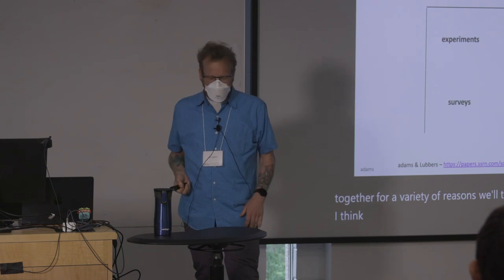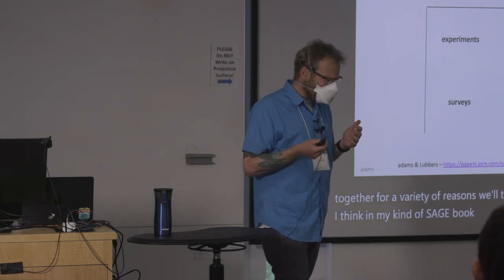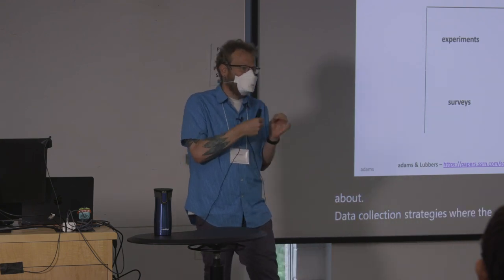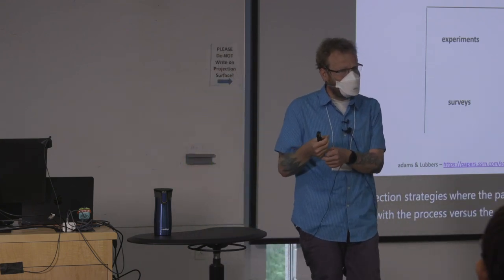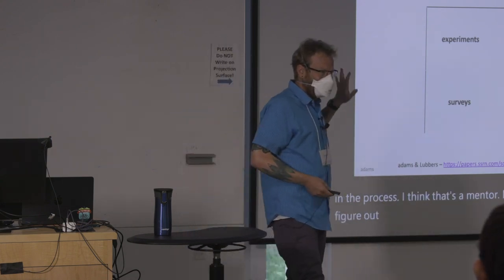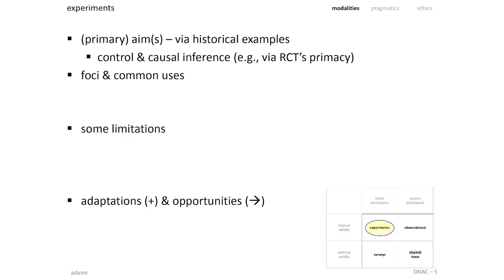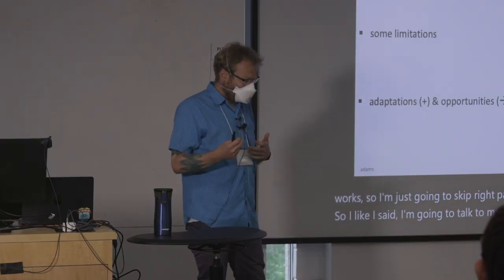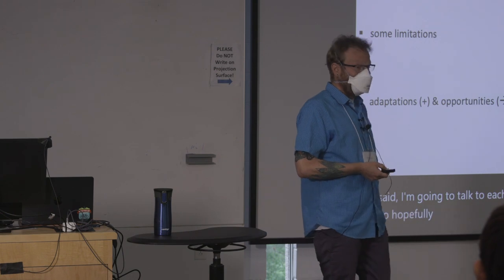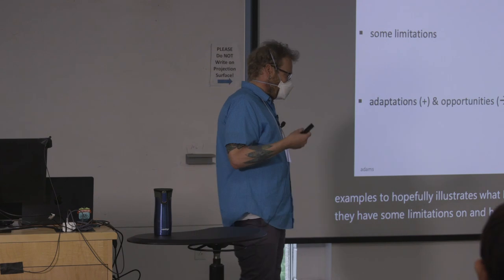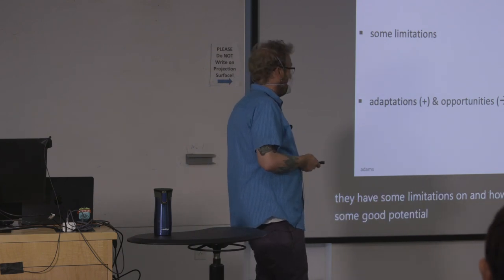In my Sage book I talked about these as data collection strategies where participants are actively involved in the process versus ones where they're passively involved. I think that dimension makes some sense, though I'm still trying to figure out the other side. I'm going to talk through each one of these in turn, give examples that illustrate what I think they're good at, what limitations they have, how we've adapted those, and also some potential opportunities going forward.